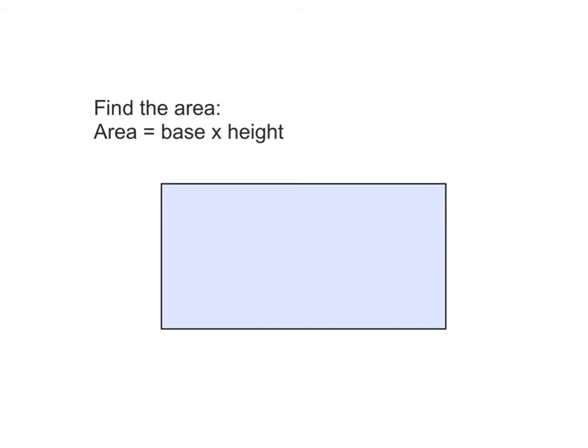So after measuring, I found this side to be two and one-fourth inches, and this side to be three and seven-eighths inches. Now because of my knowledge of rectangles, I know that this side is three and seven-eighths inches and this side is two and one-fourth inches.